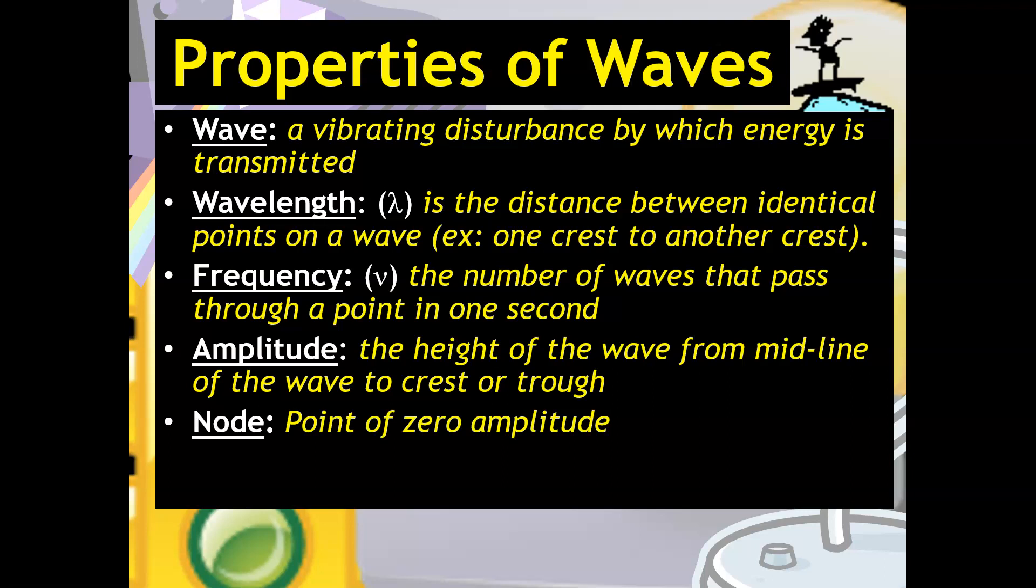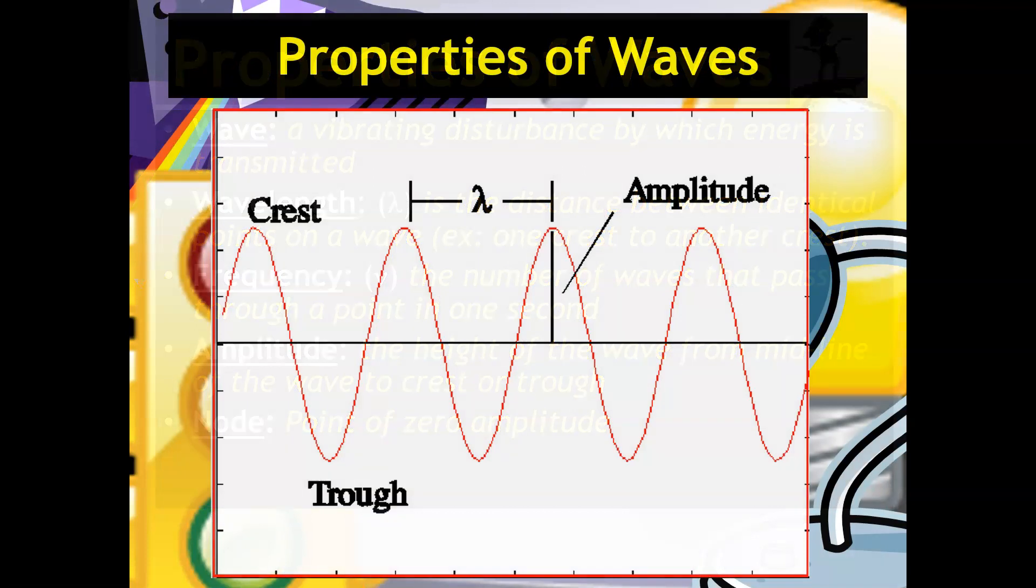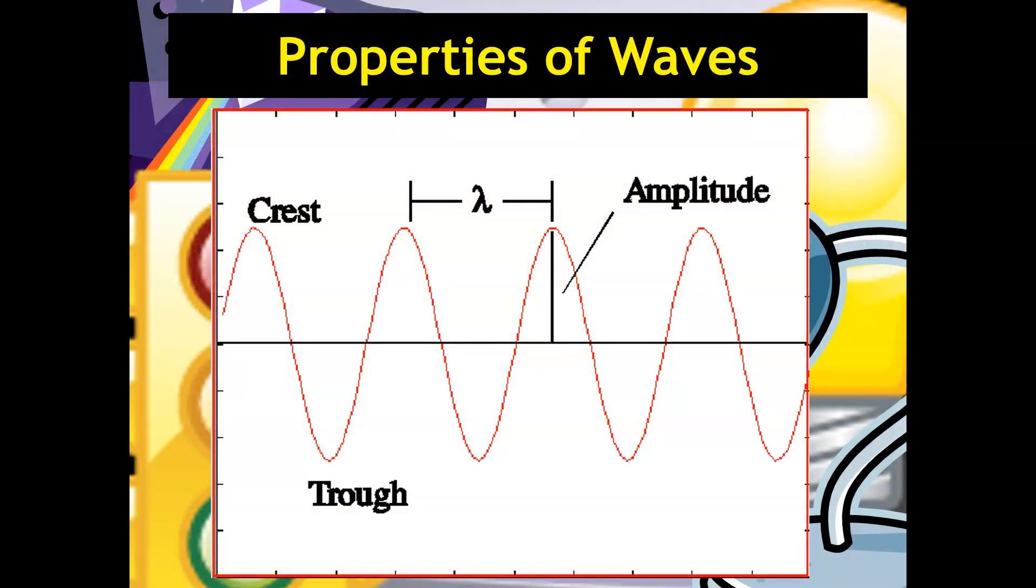A node is what we say a point of zero amplitude. And then here's an image that will hopefully help. So the crest is at the top. The bottom is the trough. Notice the wavelength goes from crest to crest. And the amplitude represents the height of the wave. The node is going to be represented right on the horizontal line. At any point on that horizontal line where the wave is intersecting, that would be considered a node, a point of what we say zero amplitude. That's what a node is.